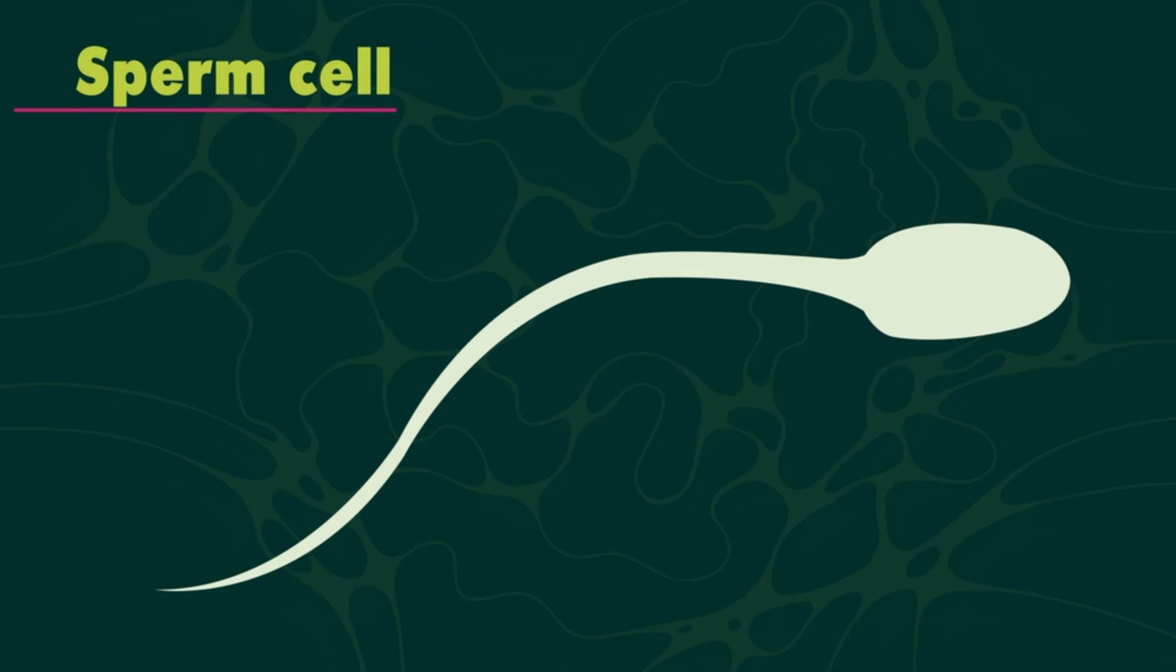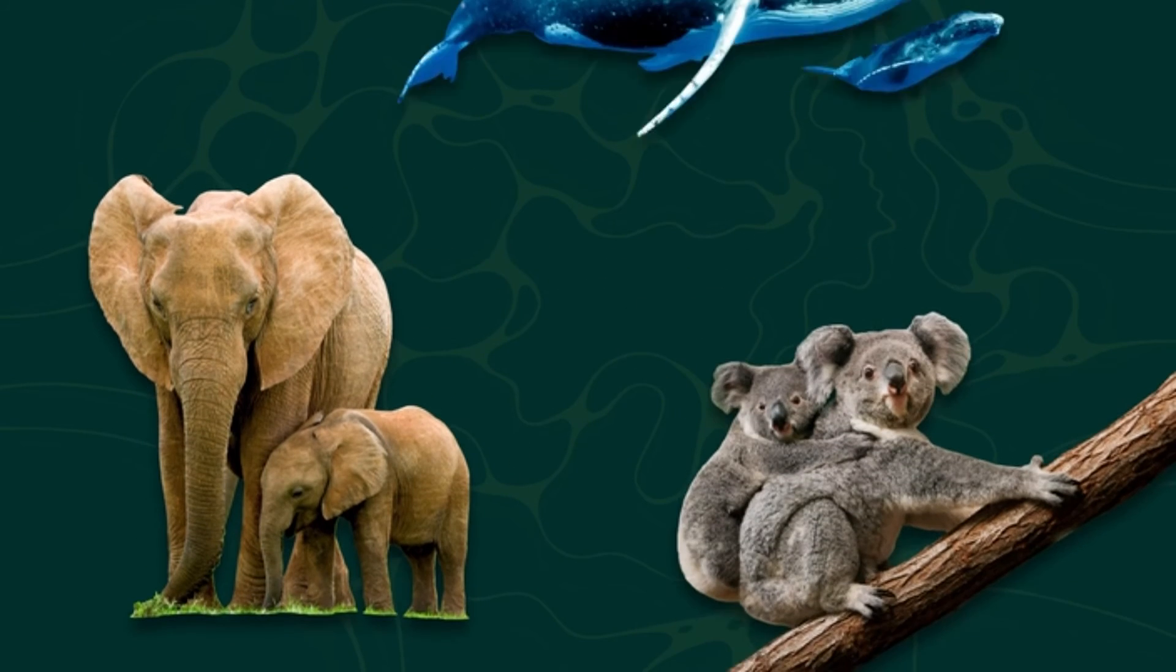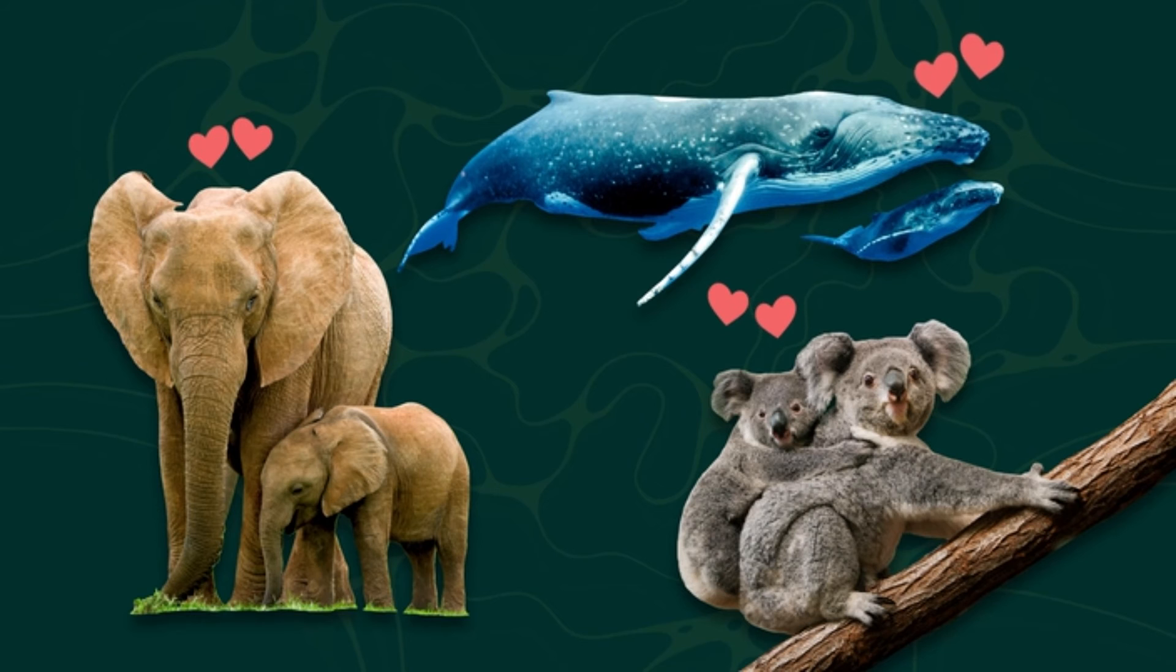Sperm cells can swim fast thanks to a tail, streamlined shape, and a high concentration of energy transferring mitochondria. Good thing too, because without sperm animals couldn't reproduce.